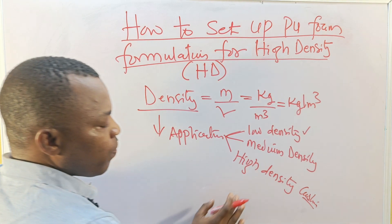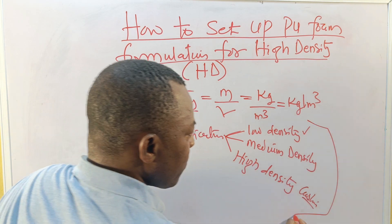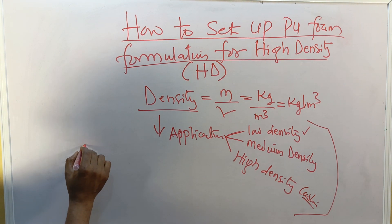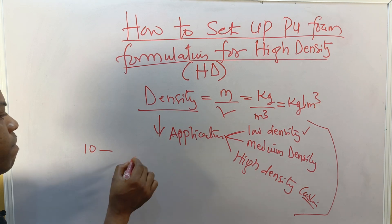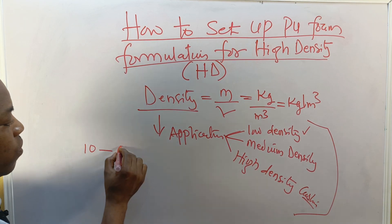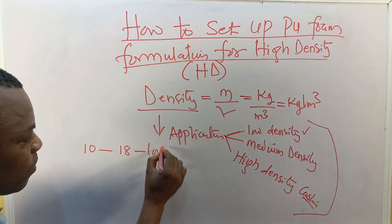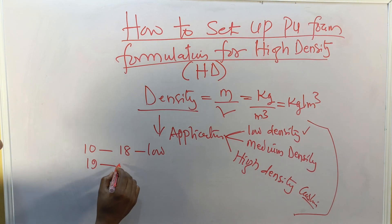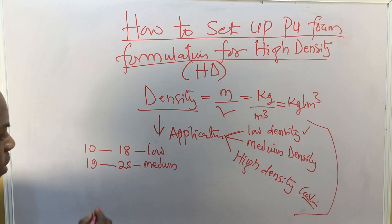In terms of numbers we have a density range from 10 to 18 as low density, from 19 to 25 as medium density, then we also have 26 above as higher density.